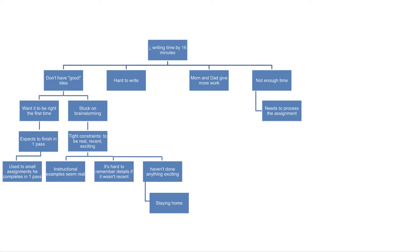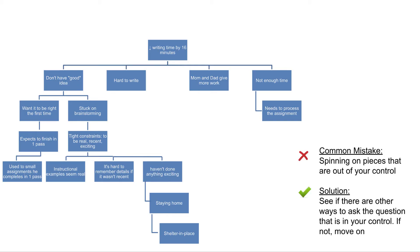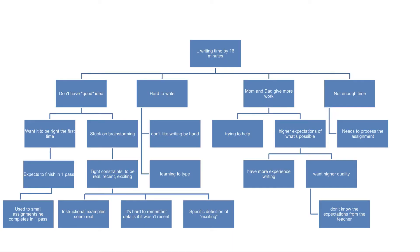Why? Because he hasn't left the house — because we're sheltering in place. I stopped this line of questioning here, since we don't have control over whether we are sheltering in place. Continuing down this path will cause us to spin, so we realize we've made it as far as we can with asking why. That was the five whys analysis. We kept asking why until we got to the underlying cause of the problem. It helped us move away from jumping to solutions and allowed us to figure out what was really getting in our way of being able to write a personal narrative.